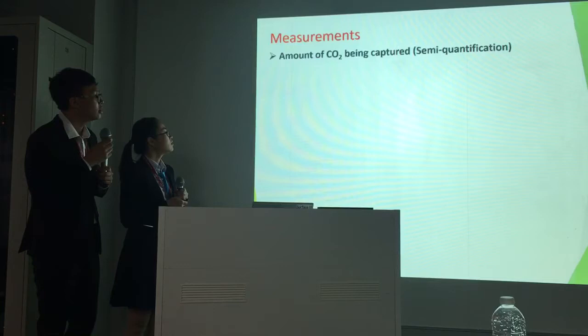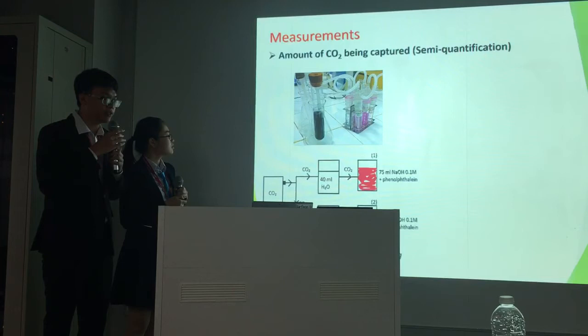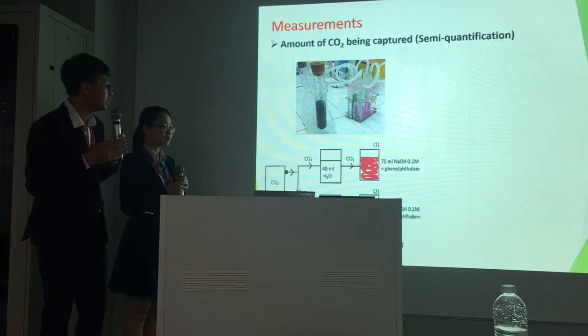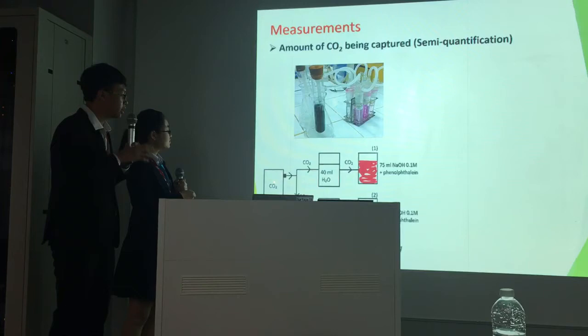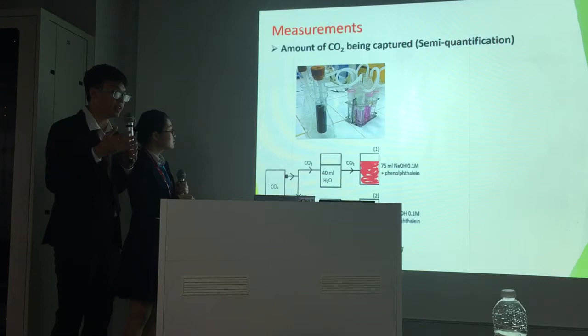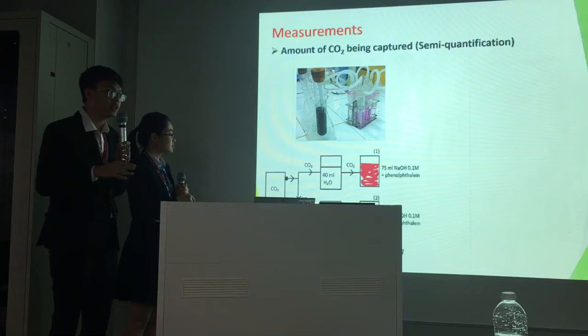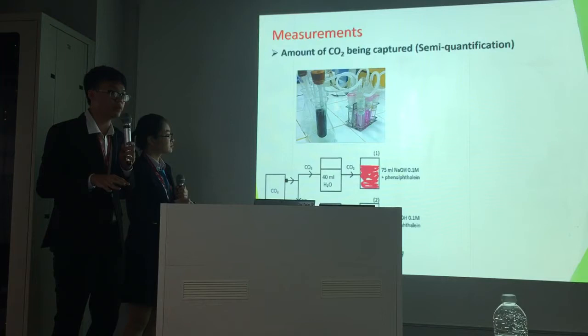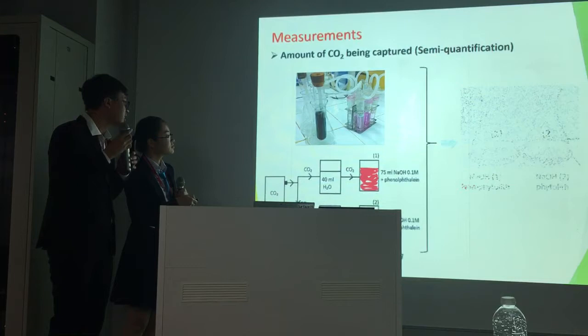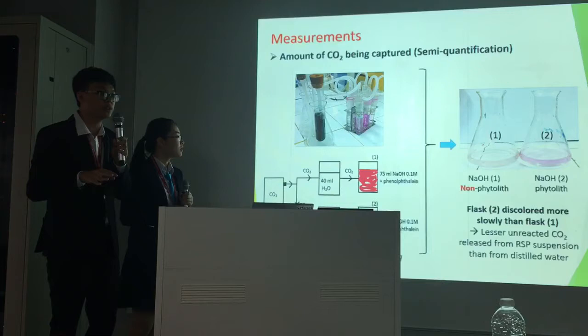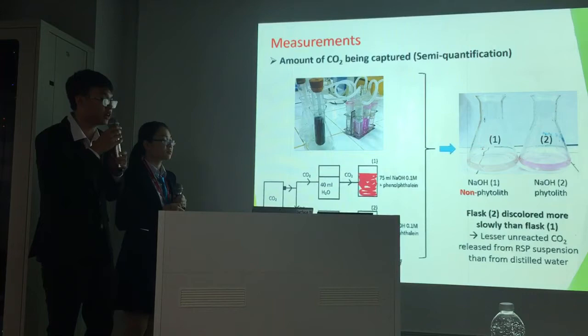To do the next measurement in our methodology, we set up this system. We let the same amount of carbon dioxide gas flow through two tubes. One contains only distilled water, and one contains the same amount of distilled water with some phytolith. The unreacted carbon dioxide is led to sodium hydroxide solution with phenolphthalein indicator.